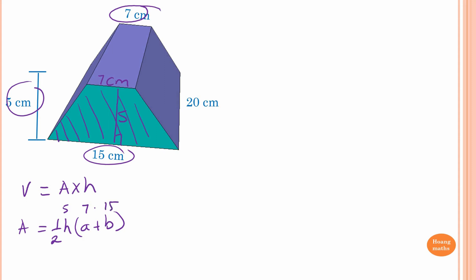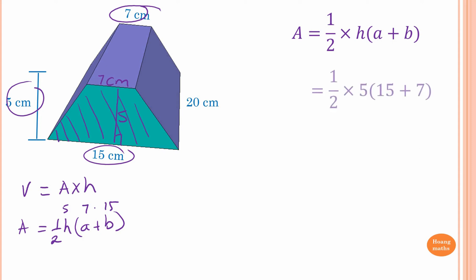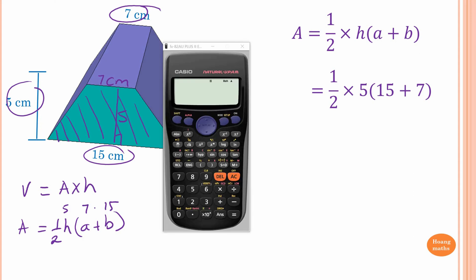So area equals a half of H times (A plus B). We substitute: H is 5, A is 7, and B is 15. So 7 plus 15, or 15 plus 7 — they're the same. Type that in the calculator: half times 5 times open bracket (15 plus 7). That gives us 55.